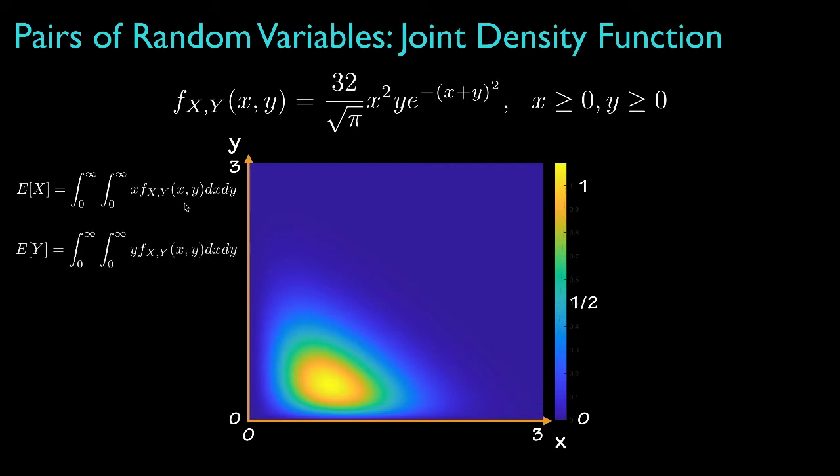Likewise, we get the expected value for Y in a similar way, this time multiplying by Y and integrating over both ranges. And those expectations we'll evaluate to approximately .9 for X and .6 for Y.